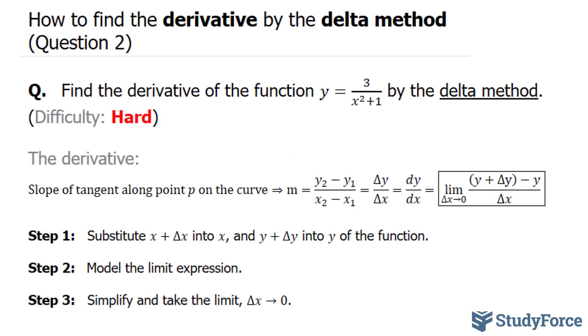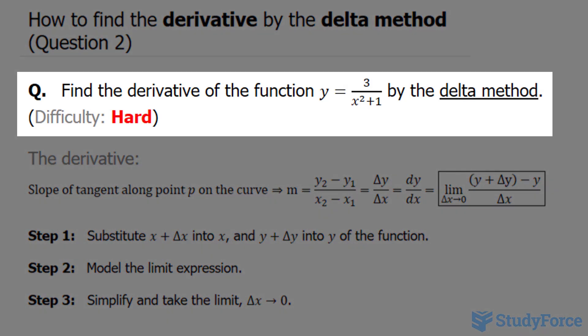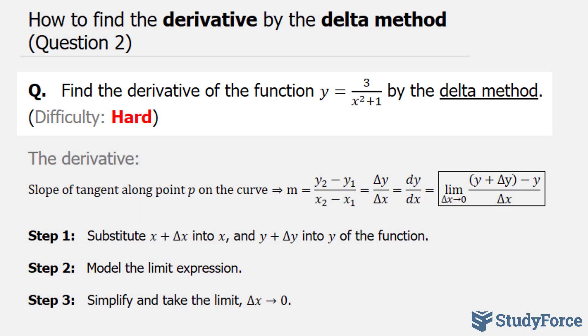In this lesson, I'll show you how to find the derivative by the delta method. This is question 2 in the series. The question reads: find the derivative of the function y is equal to 3 over x squared plus 1, by the delta method. I've given this question a hard rating because in question 1, we looked at a simple function y is equal to 3x squared. In our case here, we have a fraction with variables in the denominator position.